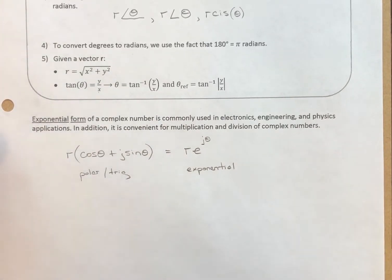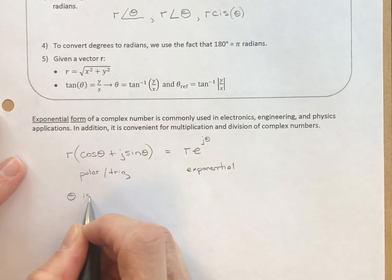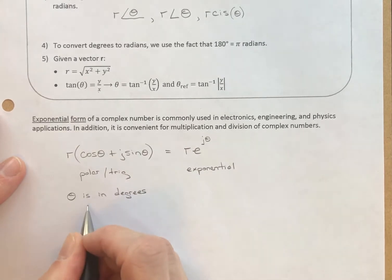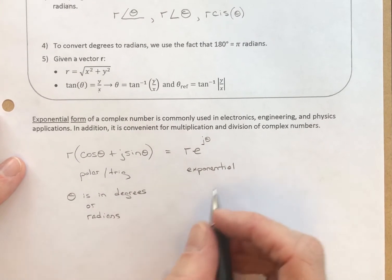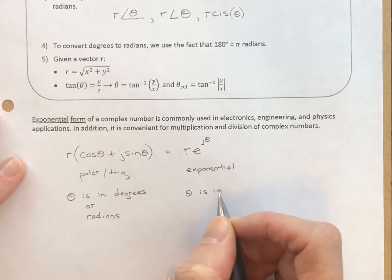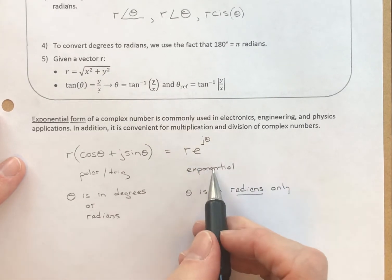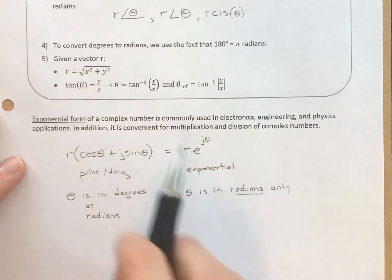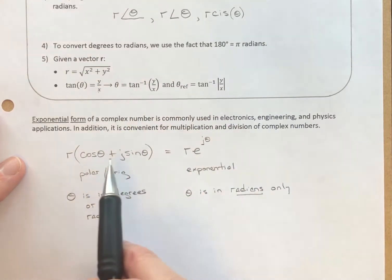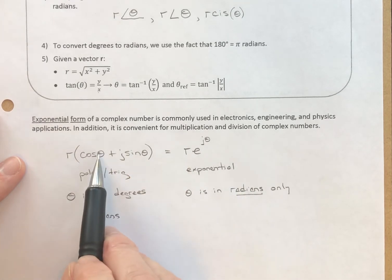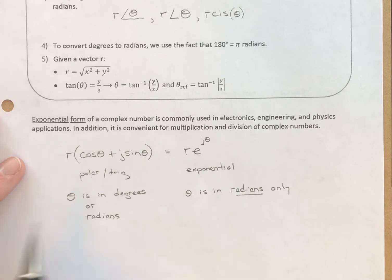We want to recognize one important difference. In the polar or trig form, theta can be in degrees or radians. In the exponential form, theta is in radians only — it has to do with how it's derived. So we want to remember that in the exponential form, theta is always in radians. That's why we need to recall how to convert degrees to radians, because when we convert to exponential form, if theta is in degrees, we need to change it to radians.